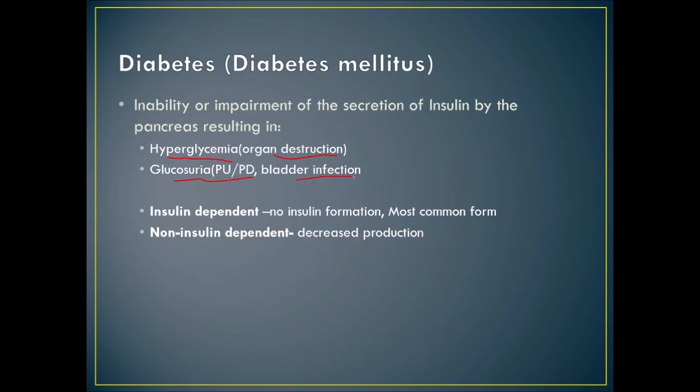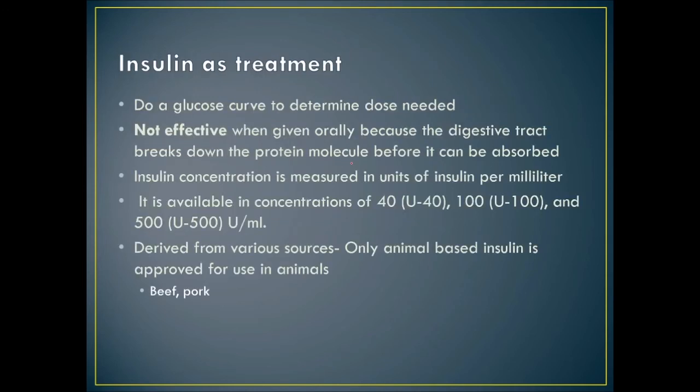Insulin is not effective when given orally because the digestive tract breaks down the protein molecule before it is absorbed. Insulin concentration is measured in units per milliliter and is available in concentrations of 40 units/mL — U40 — 100 units/mL — U100 — or 500 units/mL — U500.